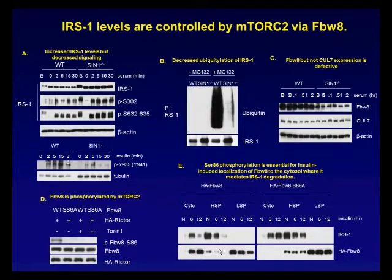We asked the question whether mTORC2 could play a role in IRS1 regulation. In panel A, we compared wild type versus SIN1 knockout murine embryonic fibroblasts, which have disrupted mTORC2. We found that IRS1 levels were highly elevated upon mTORC2 disruption. Interestingly, serine phosphorylation of IRS1 mediated by mTORC1 in these cells was not defective, suggesting that mTORC1-mediated regulation of IRS1 is not sufficient to downregulate IRS1. Furthermore, despite the increased IRS1 levels, tyrosine phosphorylation was dramatically reduced in SIN1 knockout cells, as seen in the bottom panel in A, indicating that despite increased protein levels, IRS1 had defective signaling capacity.